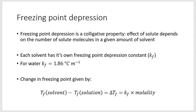The first thing we need to pay attention to is just what's going on with freezing point depression. Freezing point depression is a colligative property. There are a few of them: vapor pressure lowering, boiling point elevation, freezing point depression, and osmotic pressure. All these things depend on not so much what the solute molecules are mixed with the solvent, but how many there are.